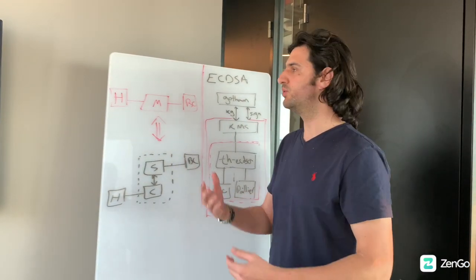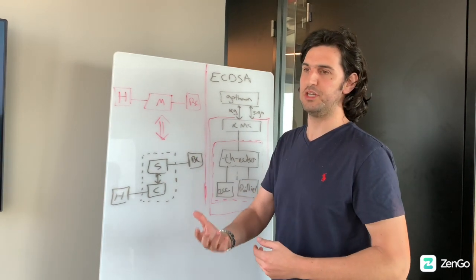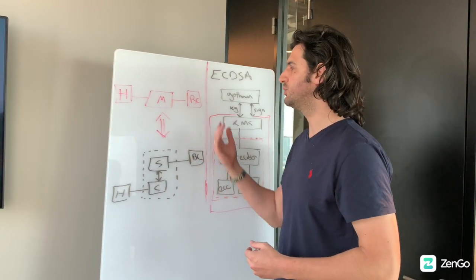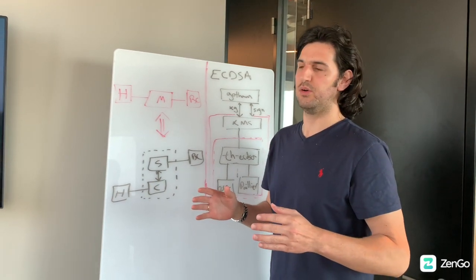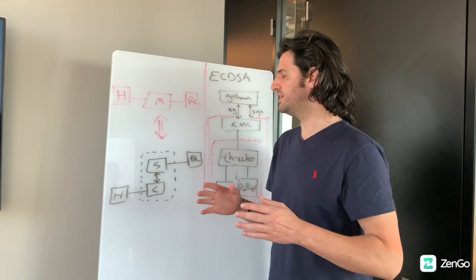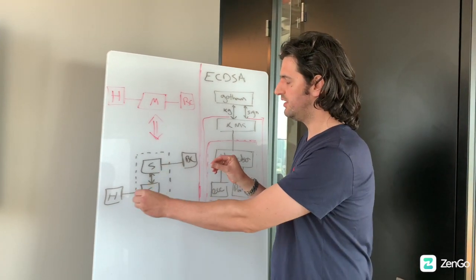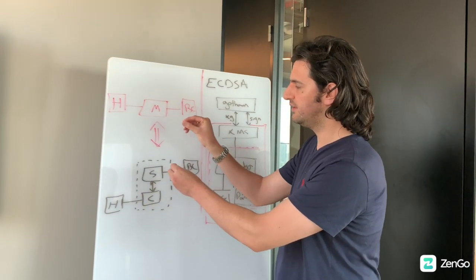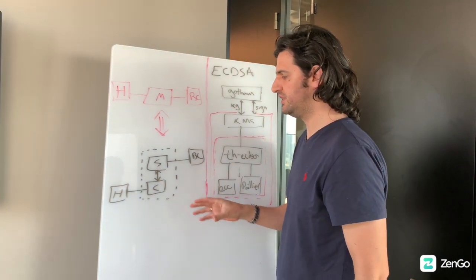The human will generate some information to create the transaction, will ask the machine to sign it, which will then send it to the blockchain. What we do in our architecture in ZENGO is a bit different. We are not changing the human and the blockchain, but we do take this machine and separate it into two different machines.